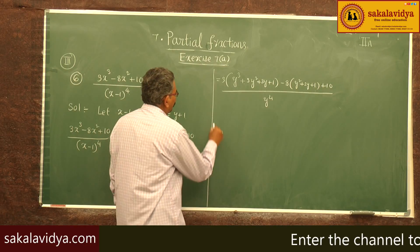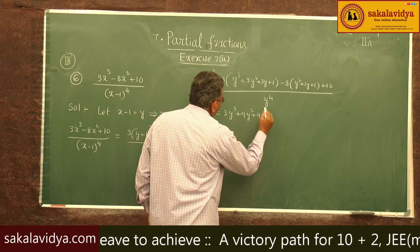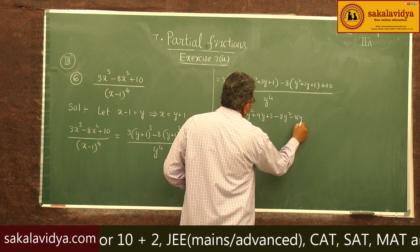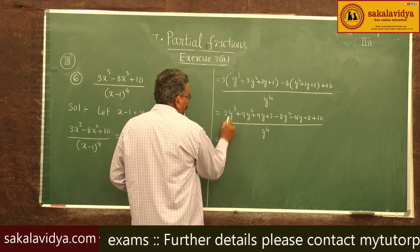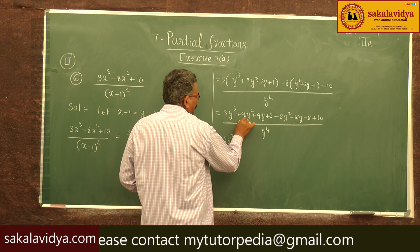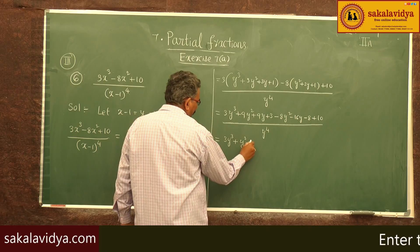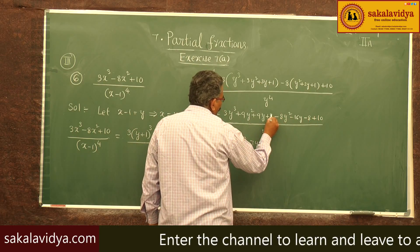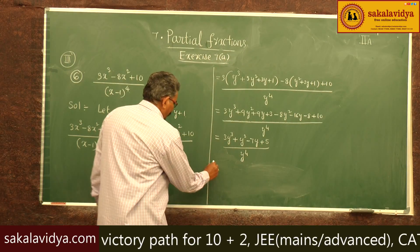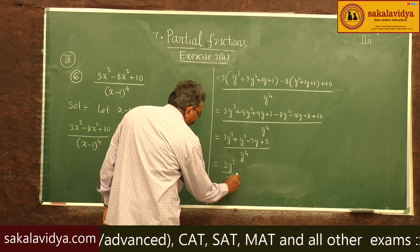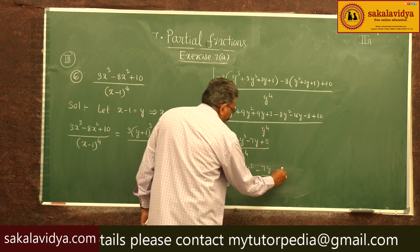Simplifying the numerator: 3y cubed plus 9y squared plus 9y plus 3, minus 8y squared minus 16y minus 8, plus 10. Collecting terms gives 3y cubed plus y squared minus 7y plus 5, all over y to the power of 4. We can now separate: 3y cubed over y⁴, plus y squared over y⁴, minus 7y over y⁴, plus 5 over y⁴.